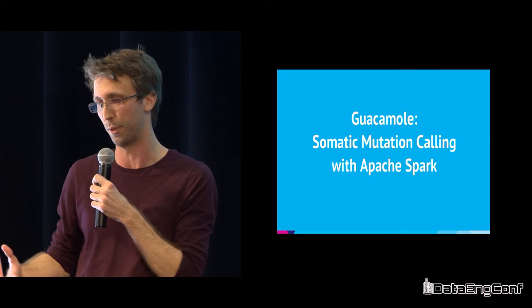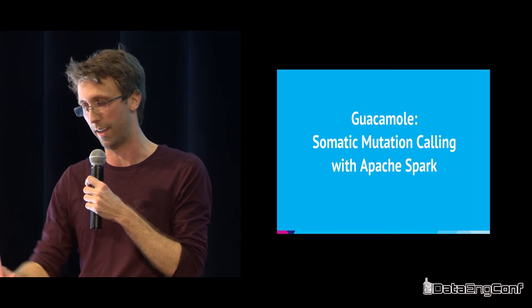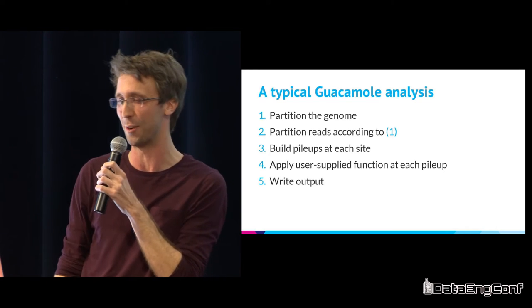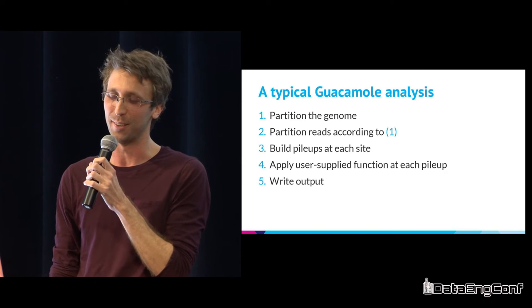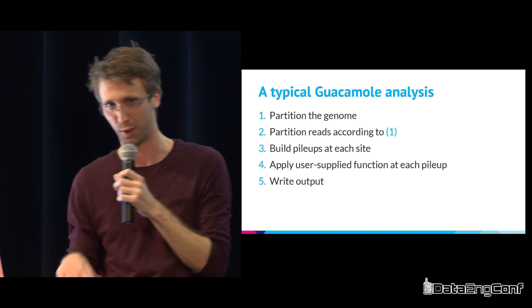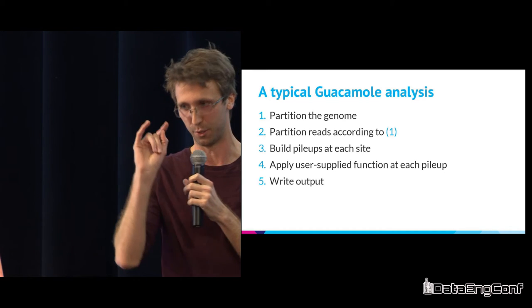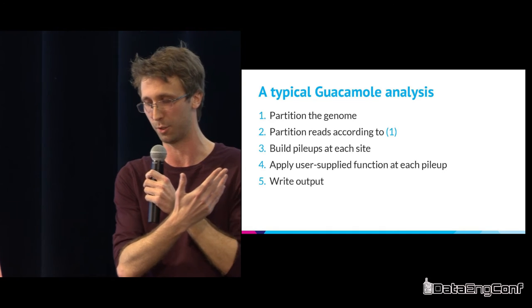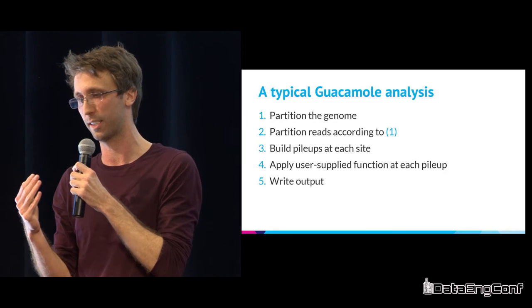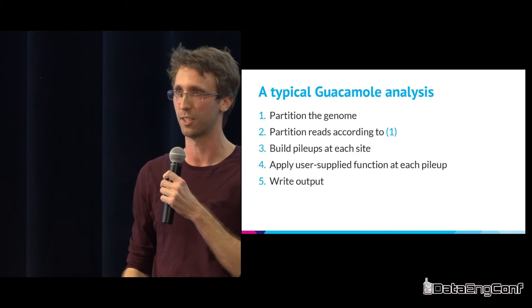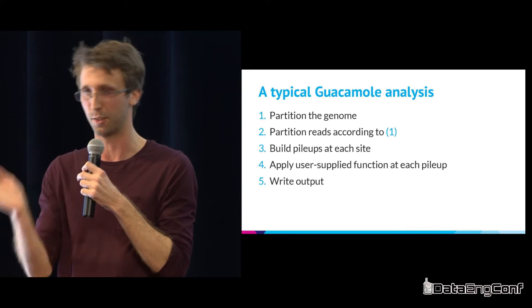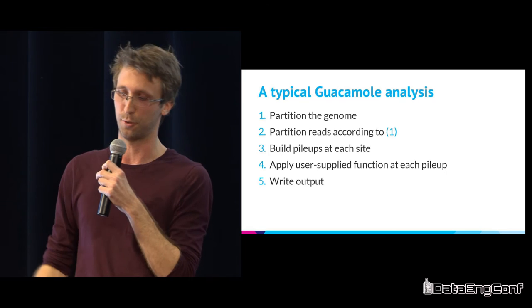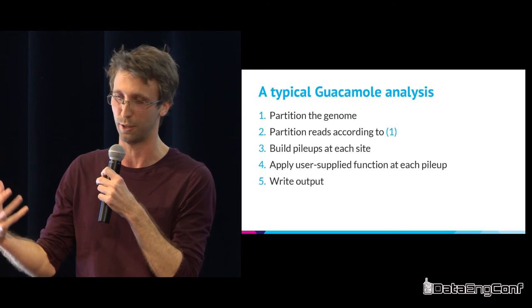That was a lot of the motivation for writing Guacamole, which is this somatic mutation caller that we've built over the last few years that runs on Spark. That we run on our Hadoop cluster at Mount Sinai. That was the end of the genomics crash course portion of the talk. The records we're dealing with in Guacamole are essentially those 100 base pair DNA fragments. And what we want to do is basically just step over them and basically for a given genomic locus, consider all the reads that overlap that locus.